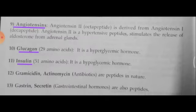Next is angiotensin. Angiotensin 2 is an octapeptide made up of 8 amino acids, derived from angiotensin 1, which is a decapeptide. Angiotensin 2 is a hypertensive product and stimulates the release of aldosterone from the adrenal glands. 'Angio' means blood vessels and 'tensin' indicates pressure; hence, as the name indicates, it helps in maintaining blood pressure with the help of aldosterone.